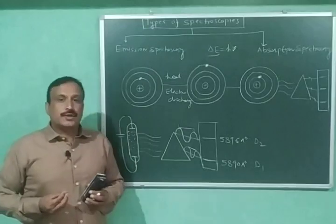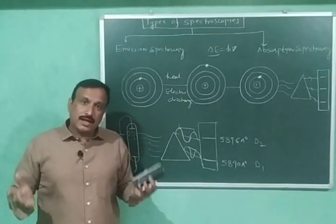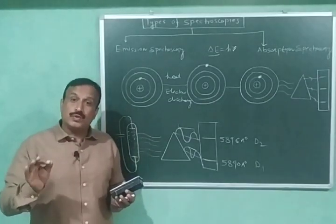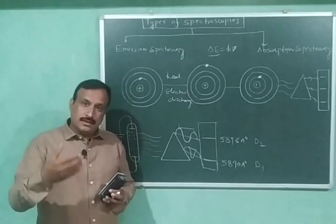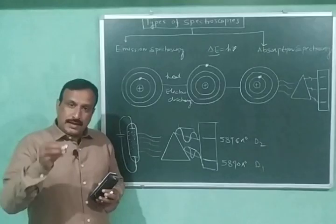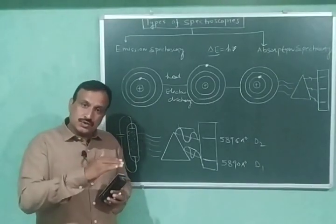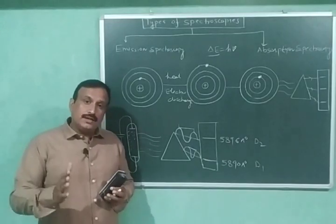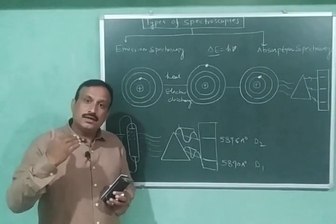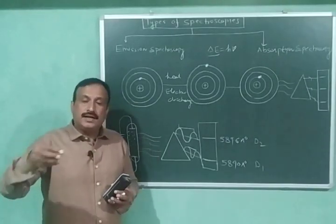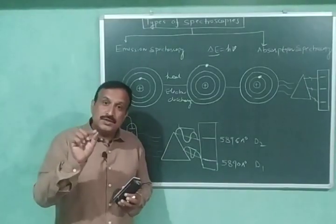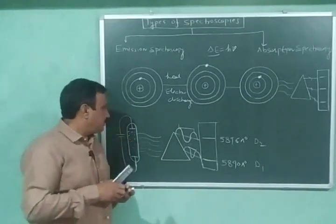In absorption spectroscopy, electromagnetic radiation from a source is allowed to pass through the solution of an absorbing substance — a substance which absorbs electromagnetic radiation. Some part of the light will be reflected, some will be transmitted, and some radiations will be absorbed. Here we analyze the transmitted radiations.